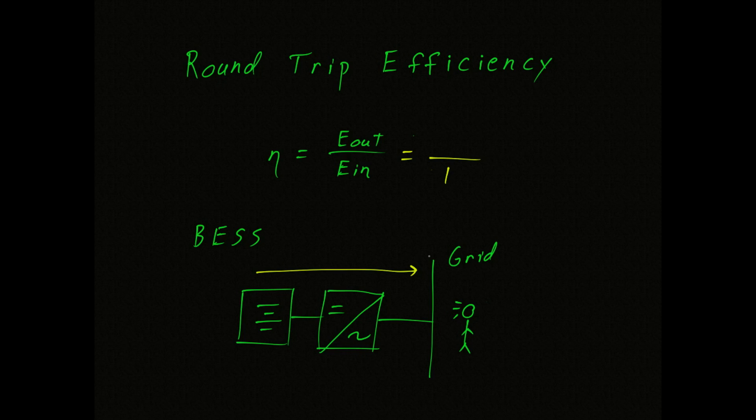Now here's the important part. We will not get one unit of energy back. Instead, on a typical system, we might only get 0.8 units of energy back, which means the system has an efficiency of 0.8, or we could say it is 80% efficient.